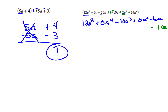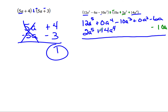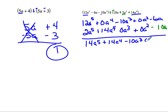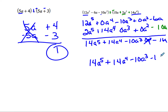We've got negative 10a, which we put under negative 6a since they're like terms. Then we have 2a to the 5th — now positive because we changed signs — and 14a to the 4th placed underneath. So 12 plus 2 gives 14a to the 5th, 0 plus 14 gives 14a to the 4th, negative 10a to the 3rd stays, 0a squared drops off, and we get negative 16a. So the answer is 14a to the 5th plus 14a to the 4th minus 10a to the 3rd minus 16a.